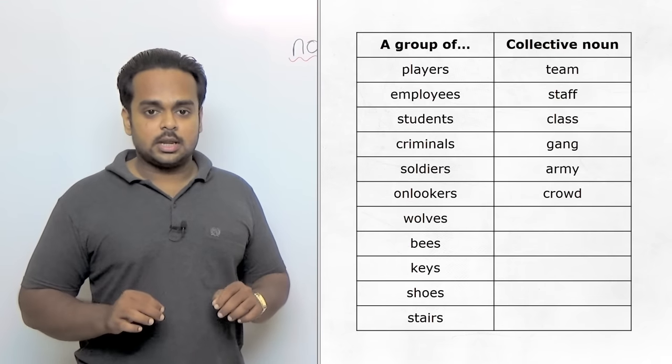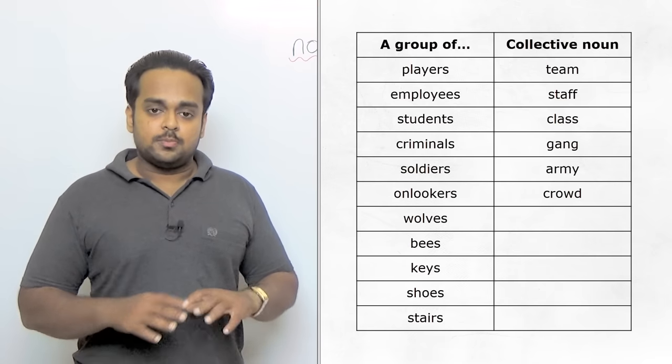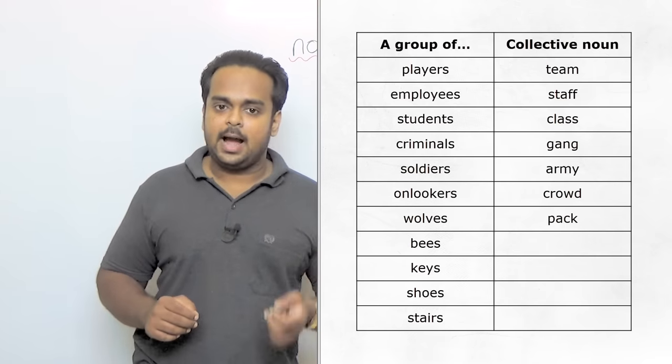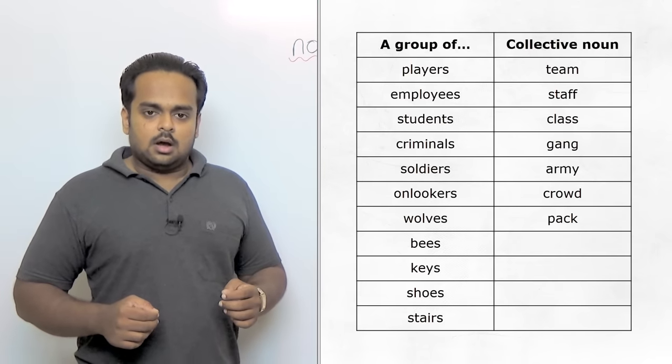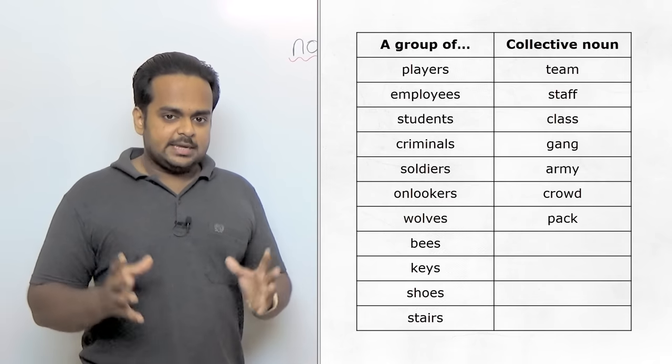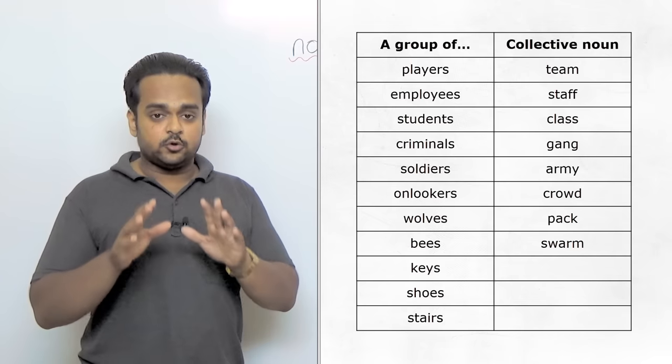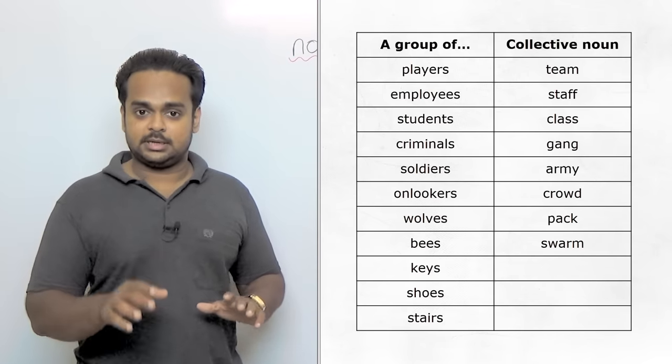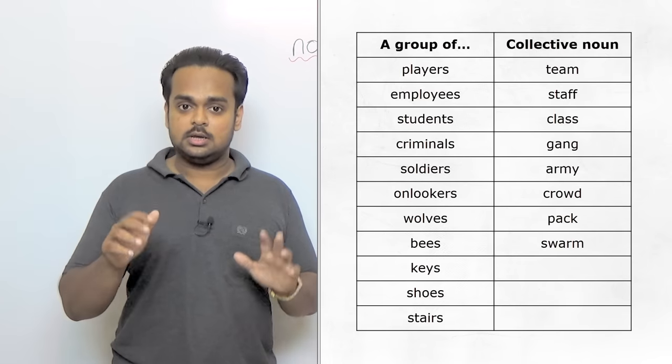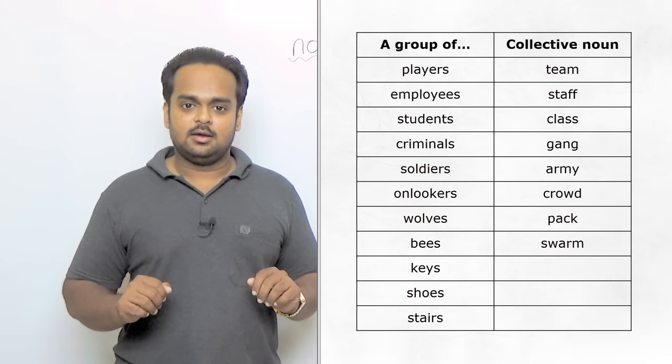There are also collective nouns for animals. For example, a group of wolves is called a pack, and wolves are very dangerous when they're in a pack. A group of bees is called a swarm. If you ever see a swarm of bees coming towards you, please run because they can sting really hard and it hurts very, very bad, okay?